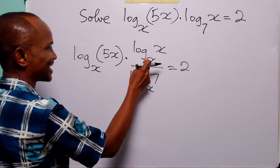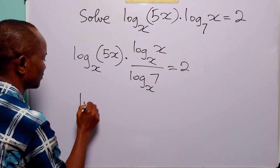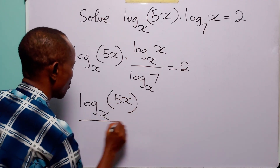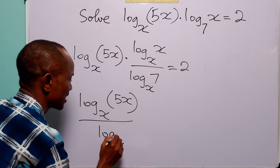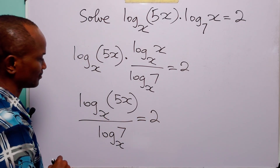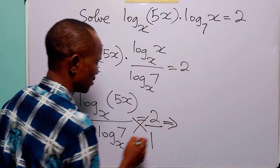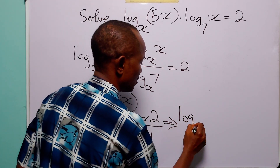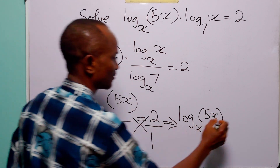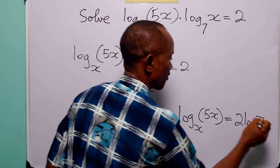Remember that log base x of x is equal to 1. So on the left hand side, we have log base x of 5x over log base x of 7, equal to 2. Cross multiplying, log base x of 5x is equal to 2 times log base x of 7.